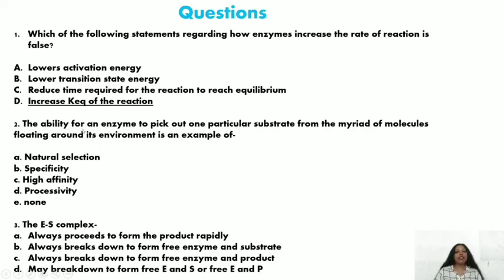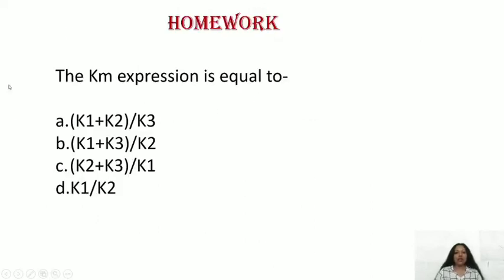Question two: The ability of an enzyme to pick out one particular substrate from many molecules in its environment is an example of enzyme specificity. Question three: The enzyme-substrate complex always proceeds to form product rapidly; always breaks down to free enzyme and substrate; always breaks down to free enzyme and product; or can break down to free E+S or free E+P. The fourth option is correct. There is also a homework calculation question for viewers to answer in the comments. Next video will cover enzymatic inhibition.